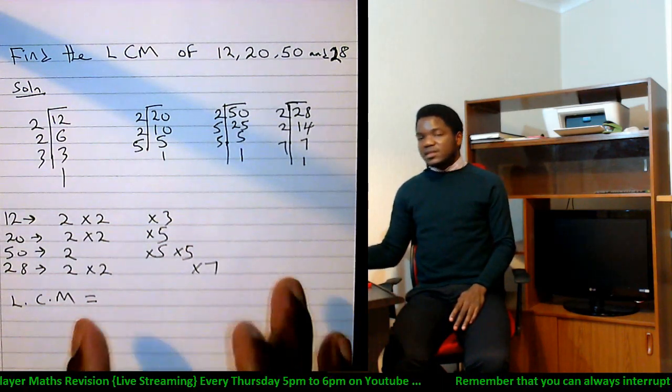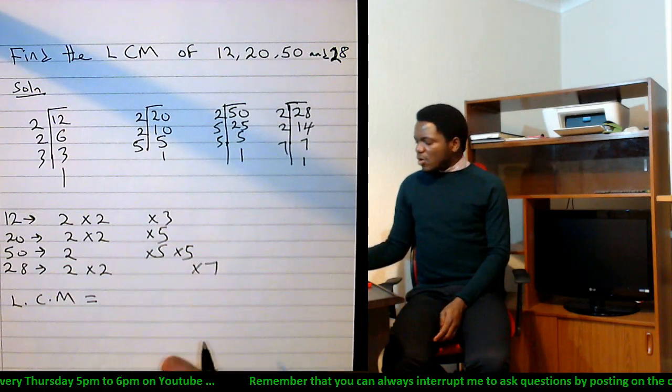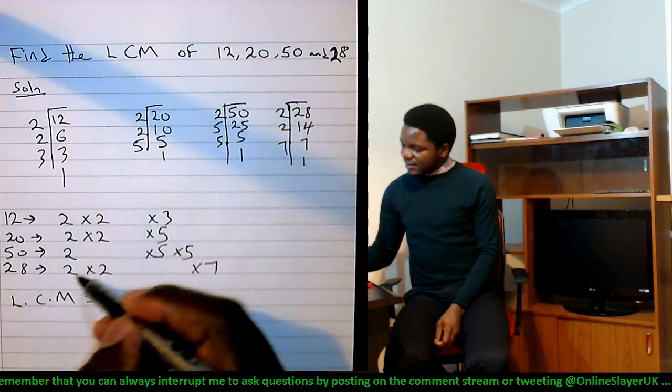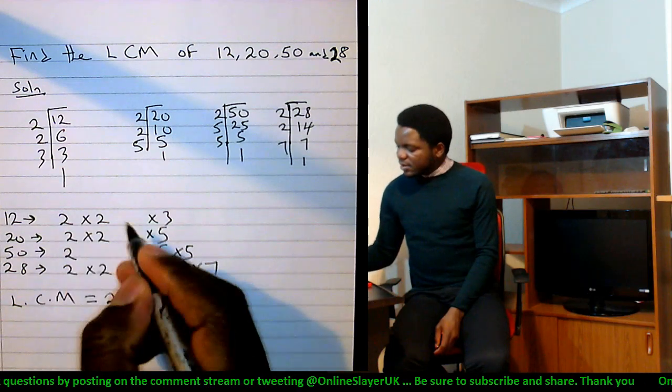And all of those numbers must appear in my LCM. Where do I have the highest congregation of twos? I've got two times two here, almost the same thing here, same thing here. I'll just pick one of them anyway, two times two, ignore the others.